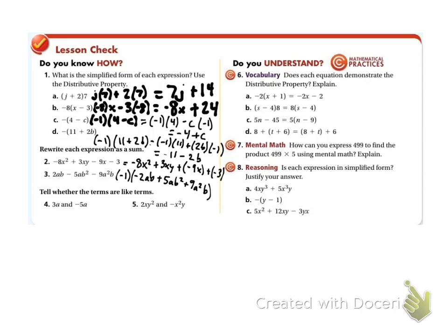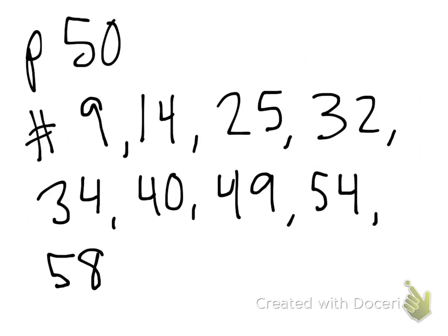Tell whether each pair of terms are like terms. This first pair both have A, so they are like terms. The second pair: one has XY squared and the other has X squared Y — so they are not like terms. And there's your homework.